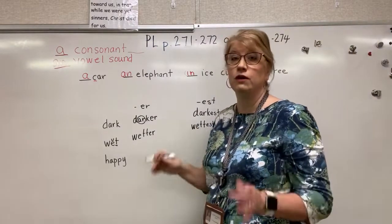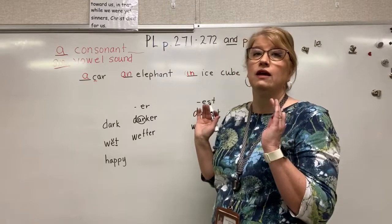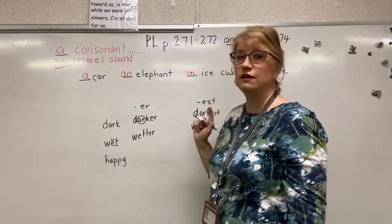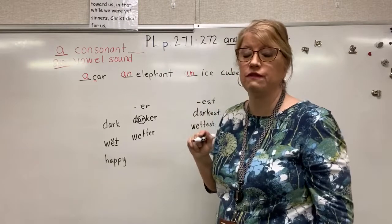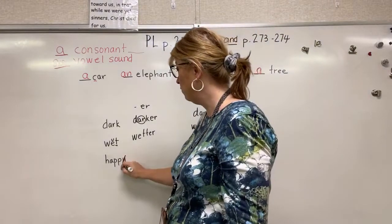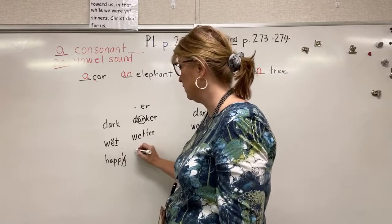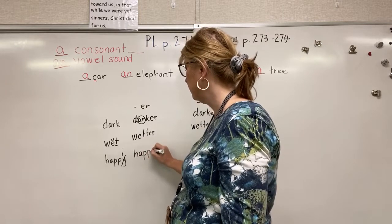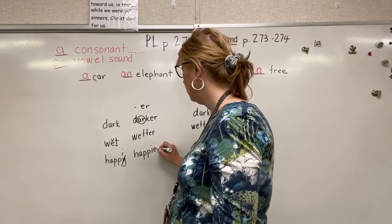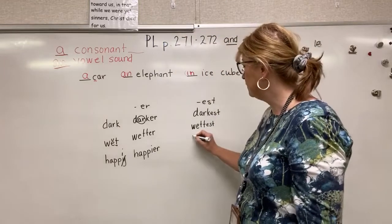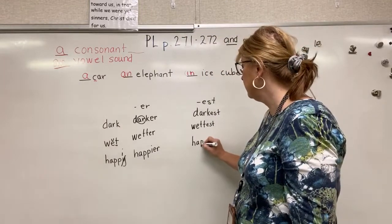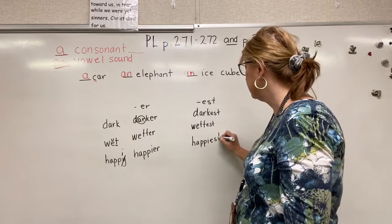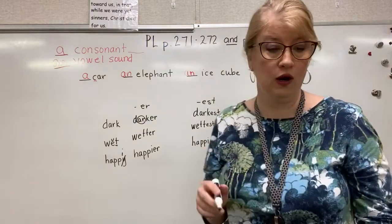Now take 'happy.' Remember, when a word ends in Y and the suffix begins with a vowel, you change that Y to an I every time. So 'happier' is H-A-P-P-I-E-R, and 'happiest' is H-A-P-P-I-E-S-T.